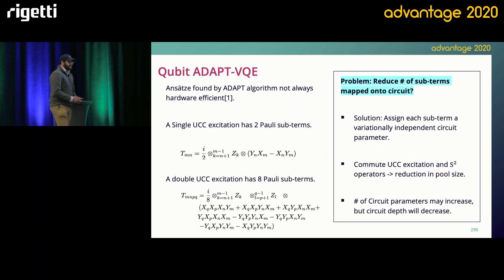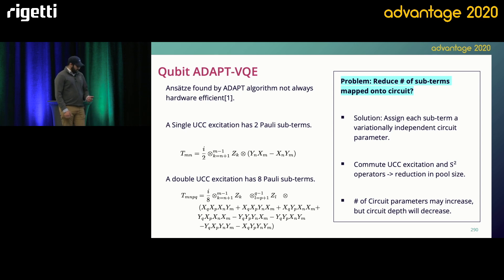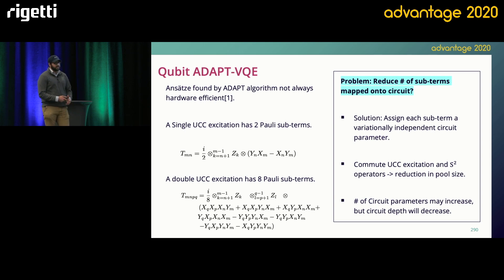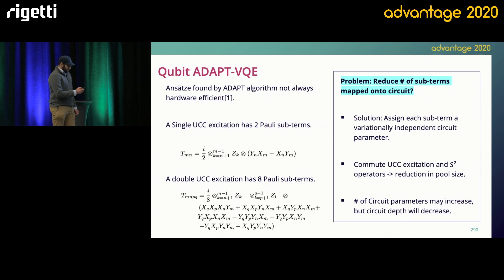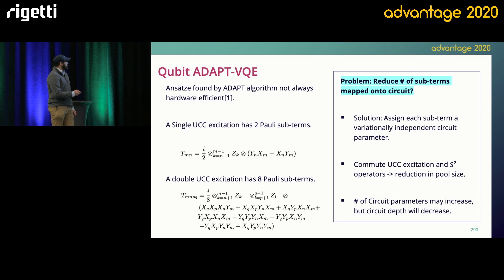The problem is you can still produce very deep circuits — you just end up with fewer parameters. For example, if singles and doubles are enough to recover the FCI energy, and we have four doubles, then you end up mapping eight Pauli exponentials for each double onto your quantum circuit, and that's too deep.